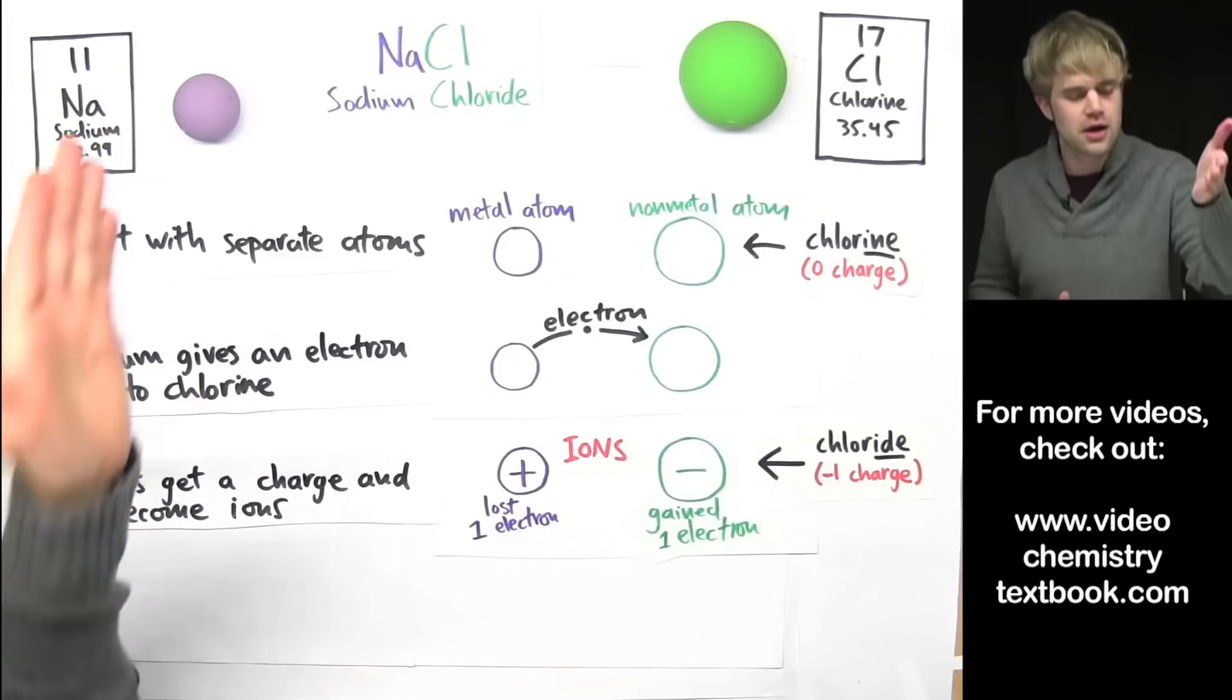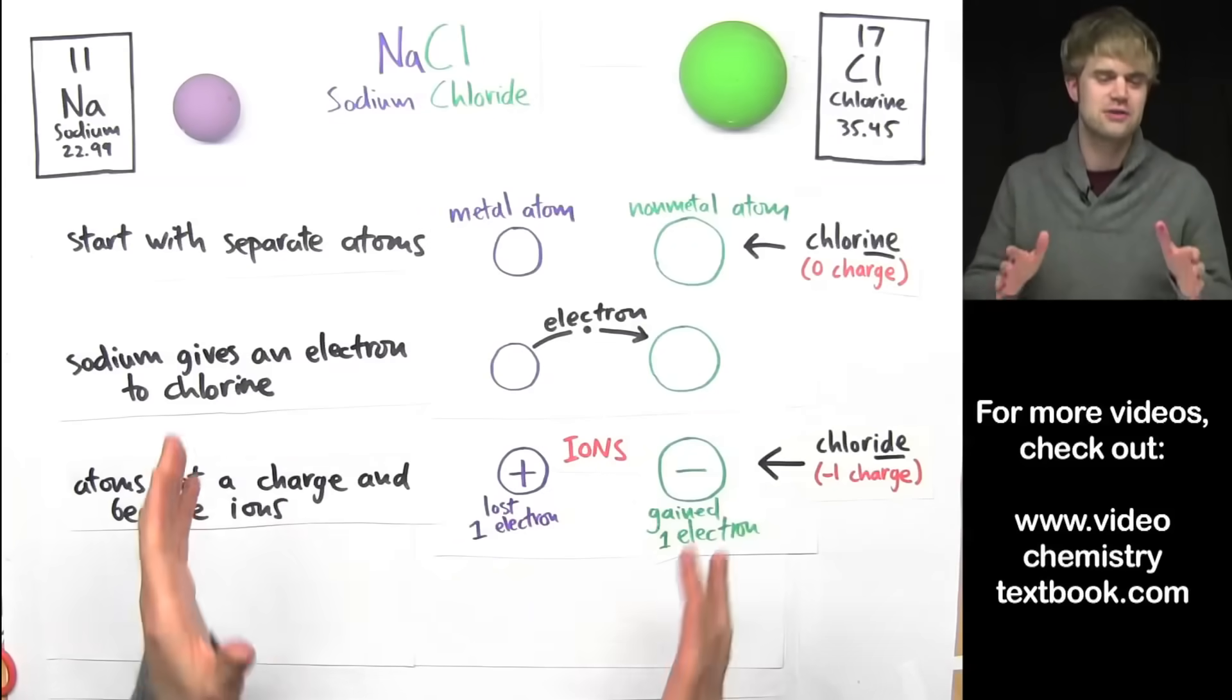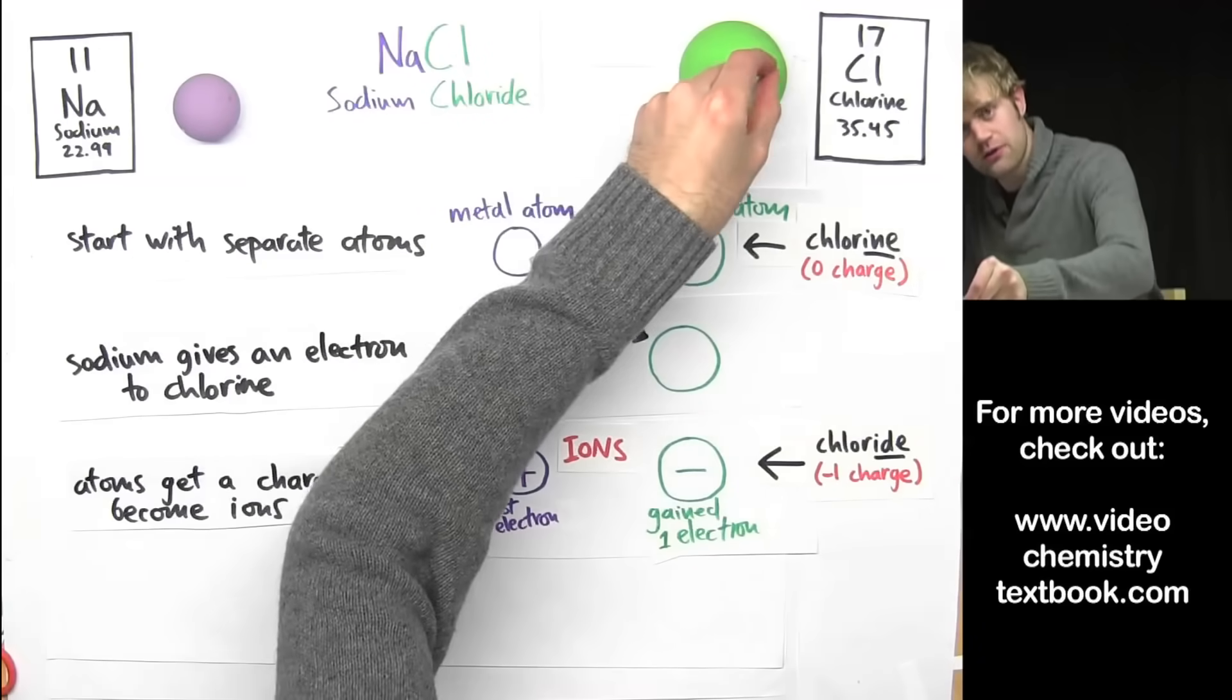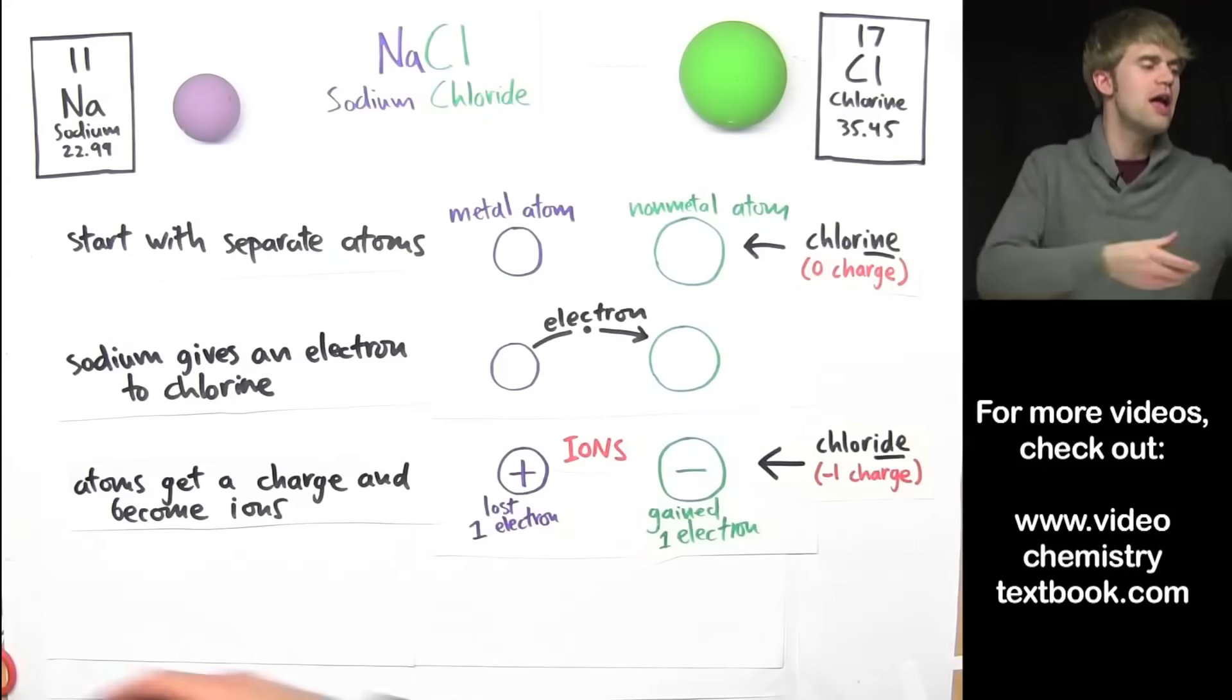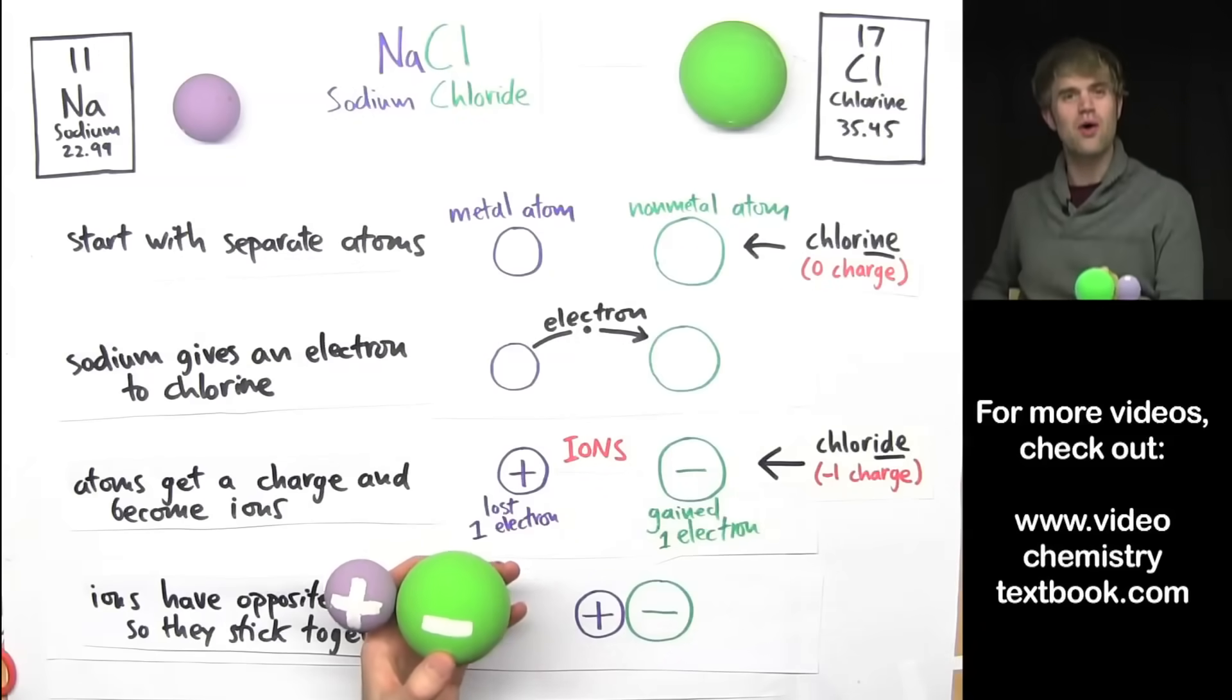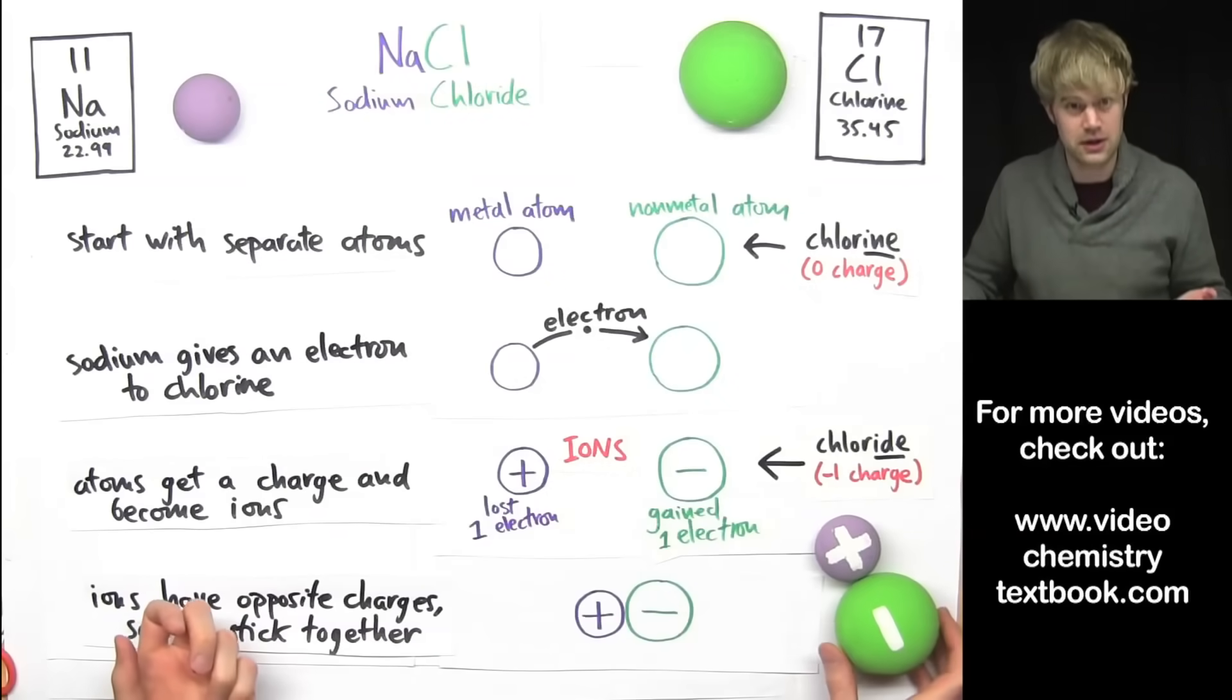Now people often ask, why does sodium give its electron to chlorine? We'll talk about that in the next video. It's a great question. But anyway, a transfer of electrons takes place between these atoms, giving this one a positive charge and this one a negative charge. And what do opposite charges like to do? They like to stick together. And so this is what we end up with. The two atoms glued together because their opposite charges are holding them together.